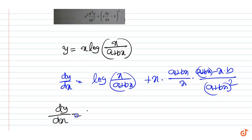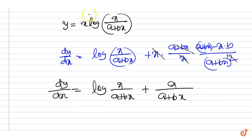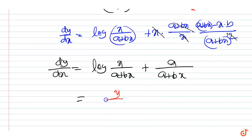That is, dy by dx equals log(x plus a) plus bx, and those terms get cancelled, so we are left with 1. Since log(x plus a plus bx) is equal to y by x, this can be written as dy by dx equals y by x plus a upon (a plus bx).